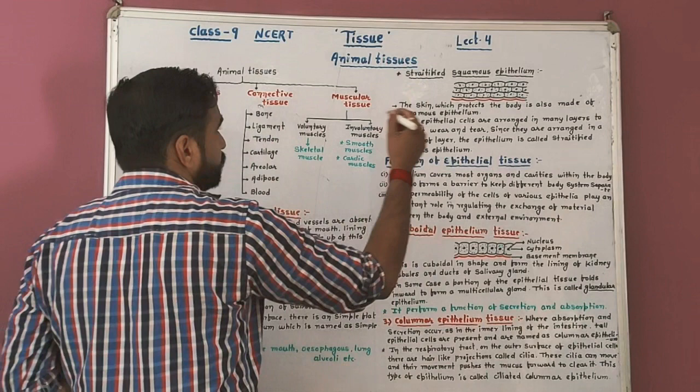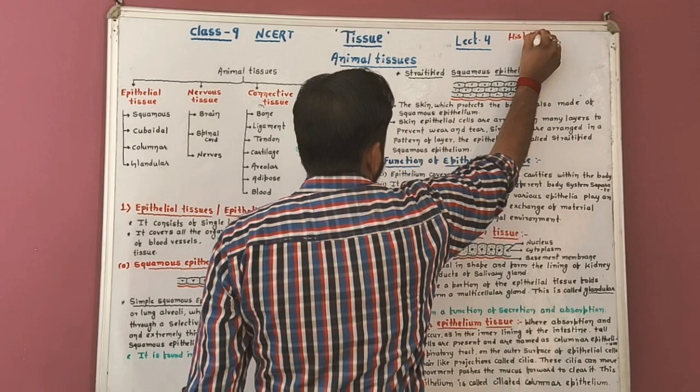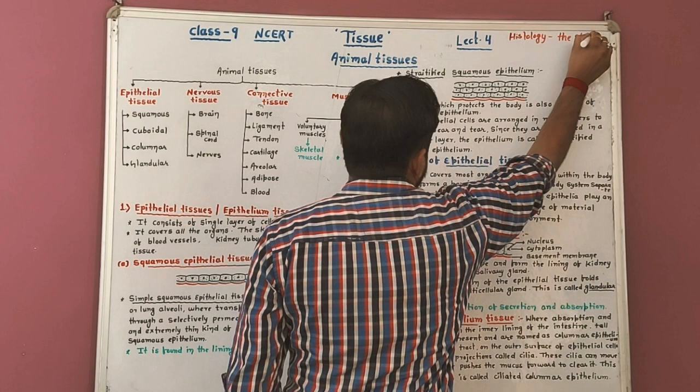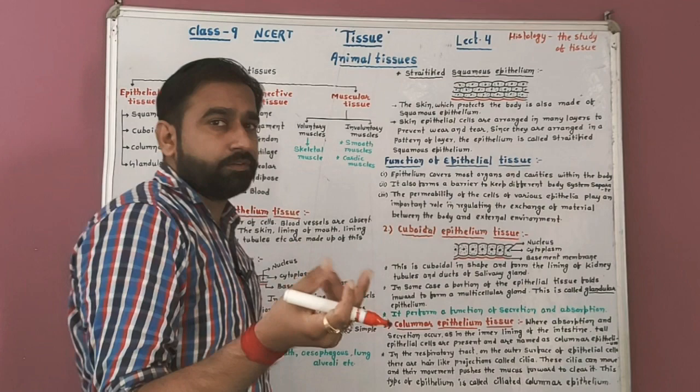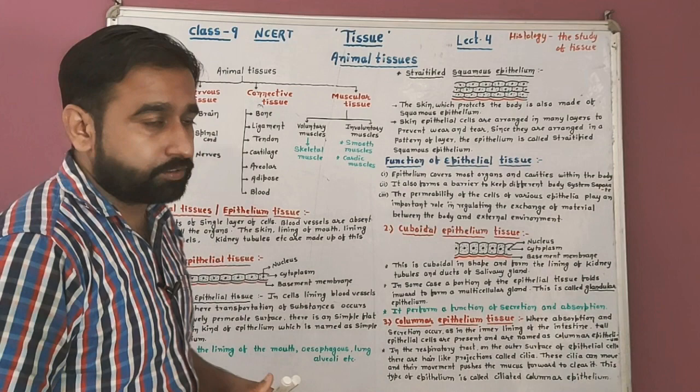Histology. The study of tissues — the branch of science in which we study about tissues is known as histology. This is commonly asked in MCQs: what is histology? The branch of biology in which we study about tissues is known as histology.